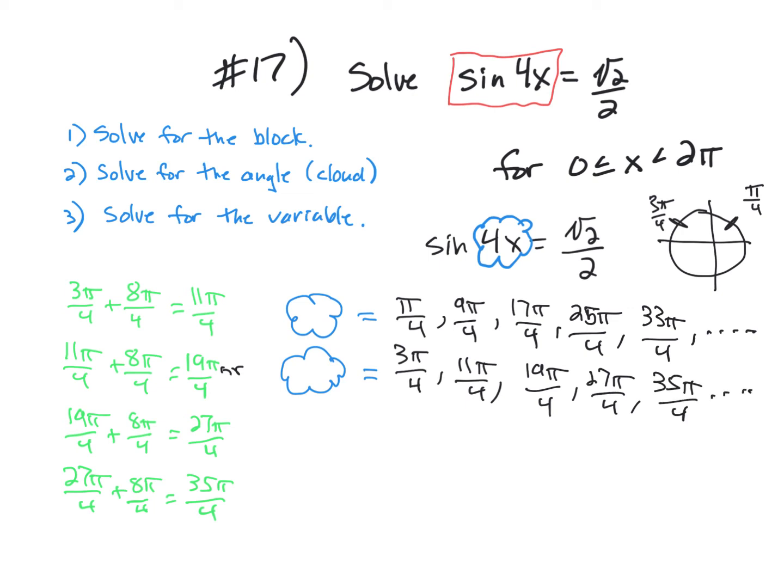So those are all solutions. And now if I have something in the cloud, which in this case is a 4x. So what I need to do is I have solved for the block, I solved for the angle, which in our case is a cloud. Now I need to solve for the variable. So to solve for x, because there's a 4 times x, I'm going to need to multiply by 1 fourth all the way through.